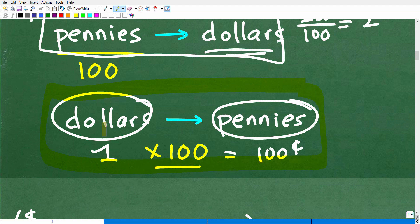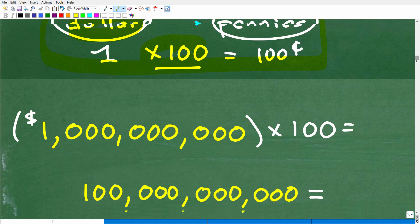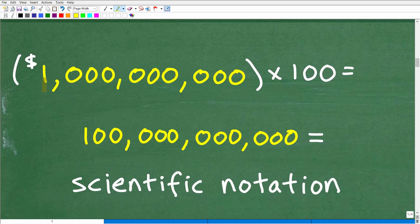You've got to be clear about what $1 billion looks like and the conversion factors for going from dollars to pennies. If I have $1 billion multiplied by 100, that conversion factor is not going to change. We take our $1 billion multiplied by 100, and you end up with 100 billion pennies. That is the right answer.